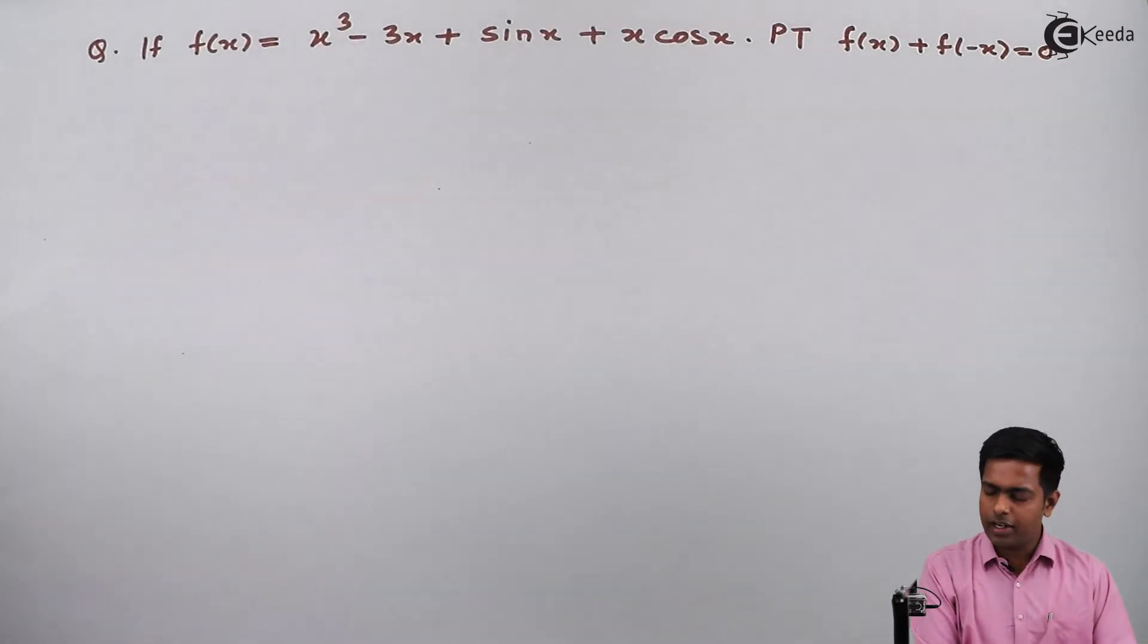Now to prove that f(x) plus f(-x) equals zero, we have to first find out the value of f(x) and f(-x). The value of f(x) is already given in the question. Hence we just have to find out the value of f(-x). So after finding the value of f(-x), in the left hand side we will substitute the value of f(x) and f(-x) and will prove that it is equal to 0. So let's start with it.